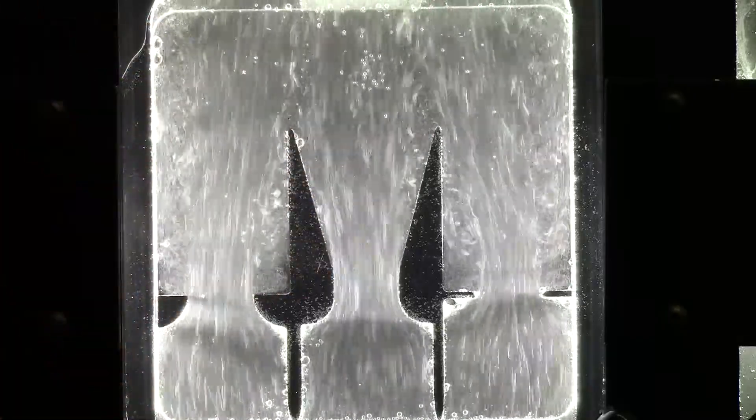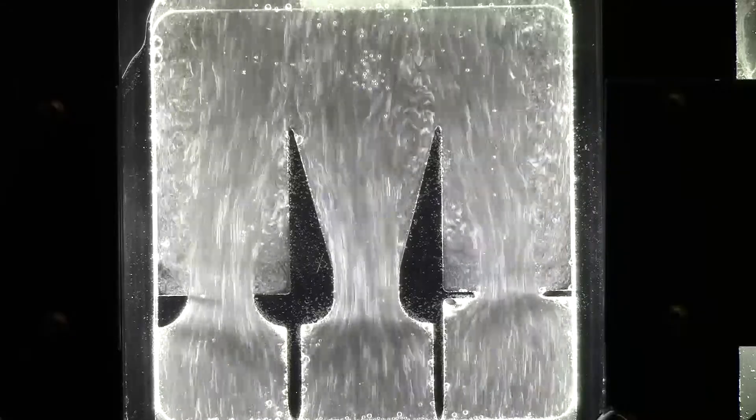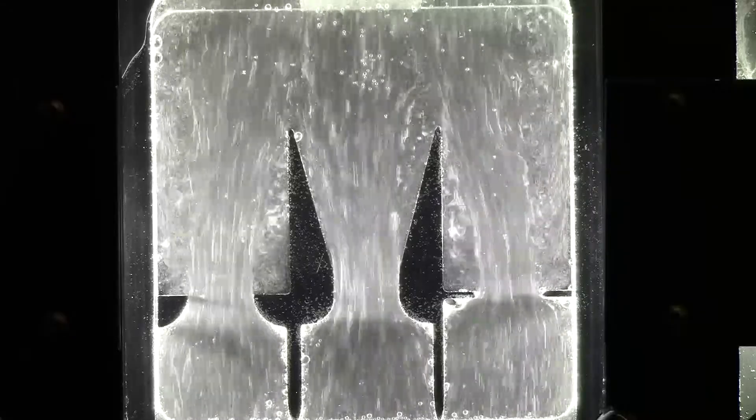So draw these things. I want to see these things in your sketch. Draw separation, circulation flow, and also turbulence in your sketch.